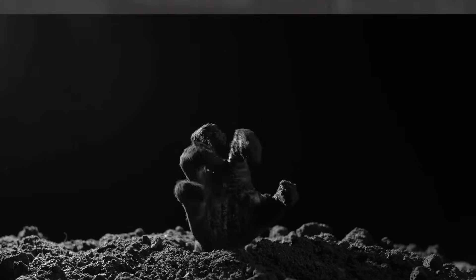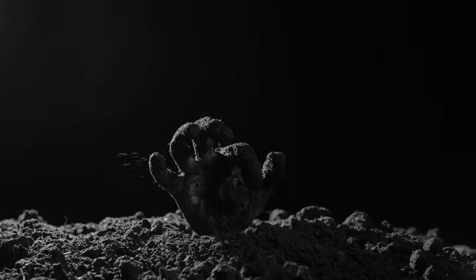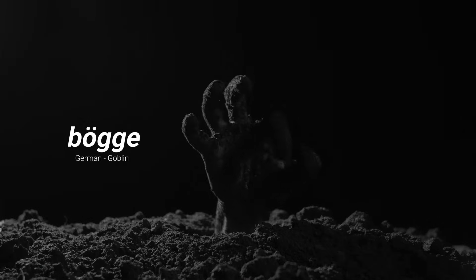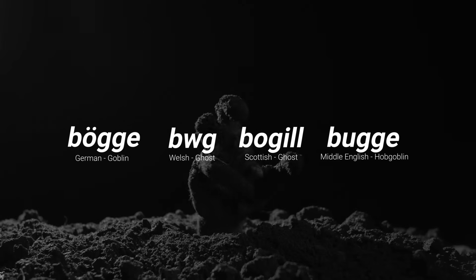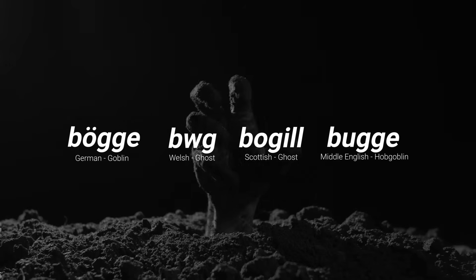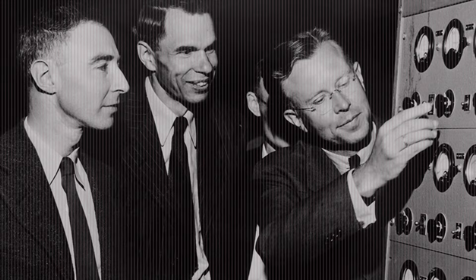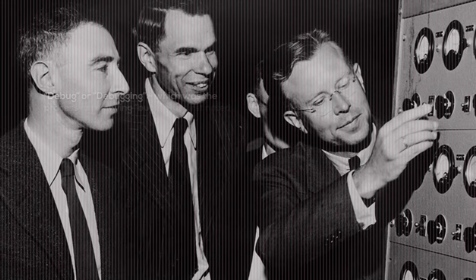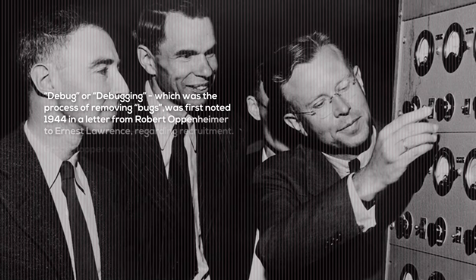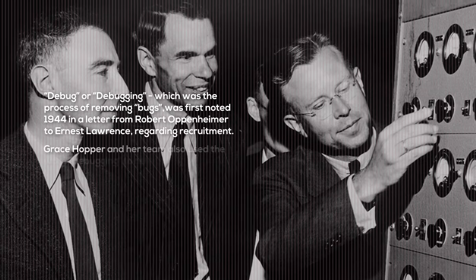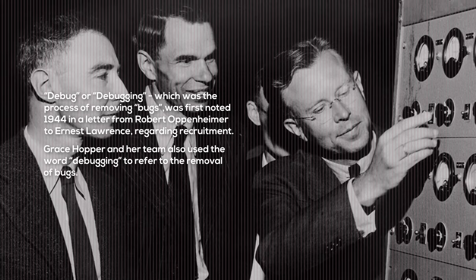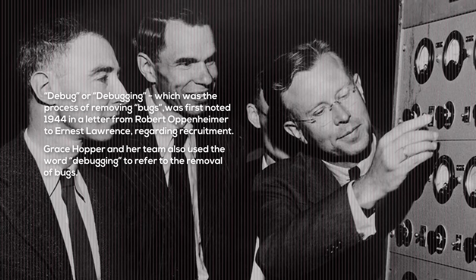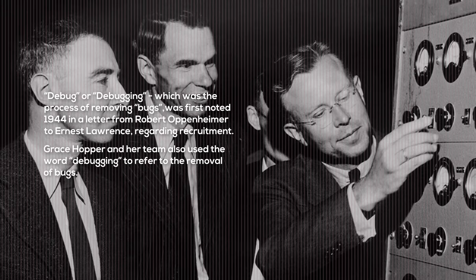Both Thomas Edison and Grace Hopper point the word's origins to German, Welsh, Scottish, and Middle English — all terms that were used to describe monsters. The word 'debug' was also used previously; the earliest traces point to a letter written by Robert Oppenheimer to Ernest Lawrence in October of 1944. However, it was only after Grace Hopper's incident that 'debugging' started to mean removing bugs from computers.